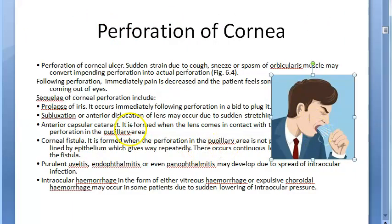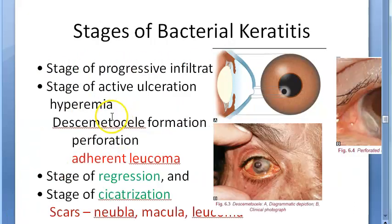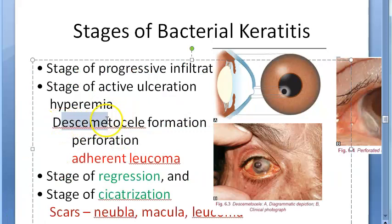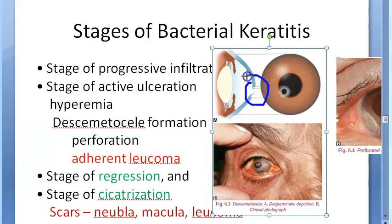If a person with a corneal ulcer coughs, sneezes, or has a spasm of the orbicularis muscle, an impending perforation can become an actual perforation. The term 'desmetocele' refers to when the ulcer has progressed till Descemet's membrane — that is an impending perforation. Once the person coughs, actual perforation can occur.